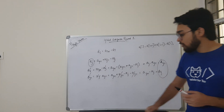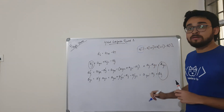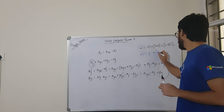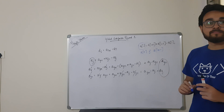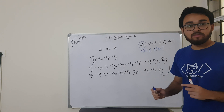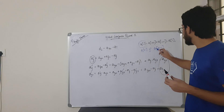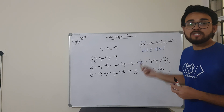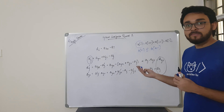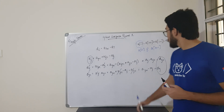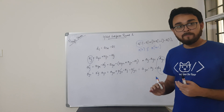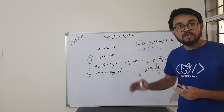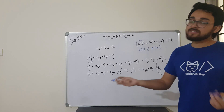There is one more thing you need to check: using this operation, you can never change A[0] and A[n-1]. So if A[0] is not equal to B[0], or if A[n-1] is not equal to B[n-1], then obviously you cannot change them into one another and the answer is no. So we finally come to three conditions: if A[0] ≠ B[0], or A[n-1] ≠ B[n-1], or the difference arrays of A and B are not equal, then the answer is no. Otherwise you can always do this.